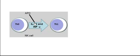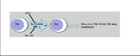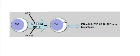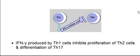To summarize: antigen presenting cells produce interleukin 12, natural killer cells produce interferon gamma, and both interferon gamma and interleukin 12 affect the activated T cell to become a T helper 1 cell. Once converted, the T helper 1 cell will produce different types of cytokines: interferon gamma, interleukin 2, TNF, CD40, TGF-beta, and so forth.